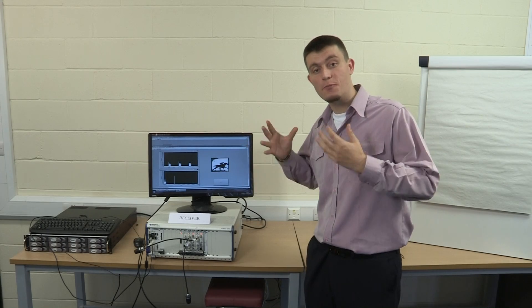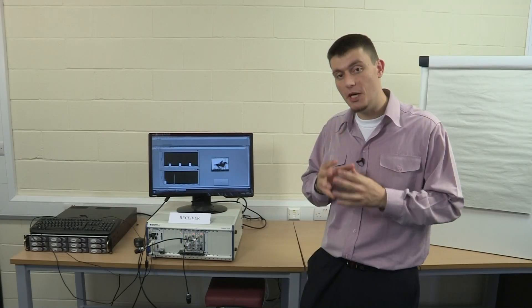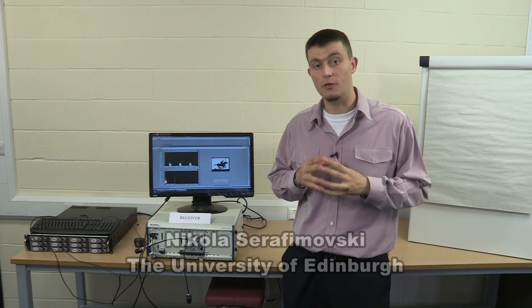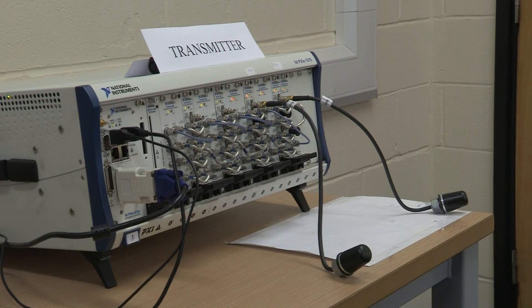This is the world's first practical implementation of the spatial modulation principle. Spatial modulation uses multiple transmit antennas to convey extra information bits. In particular, this extra information is encoded in the physical location of the transmitting antenna.